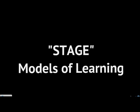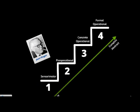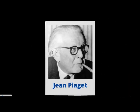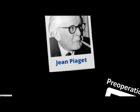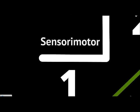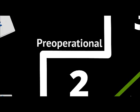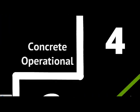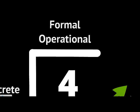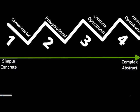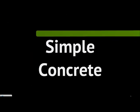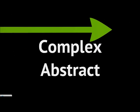First, we'll look at stage models, and perhaps the best example of these are the Piaget series of development from sensory and motor skills to formal operational skills. Most educators are familiar with Jean Piaget. Basically, we have a set of stages going from sensory motor, in a very predetermined order, to pre-operational, concrete operational, and finally formal operational skills.